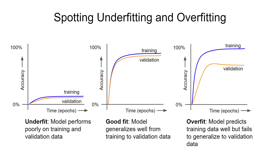Spotting underfitting is relatively easy — the model simply won't work well at all, regardless of which dataset you use. In the ideal case, the accuracy with the training data and validation data will both be high. You likely won't get to 100% accuracy, but depending on your use case, 80 to 90% may be good enough.